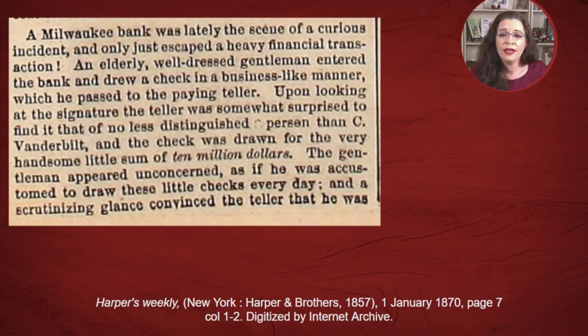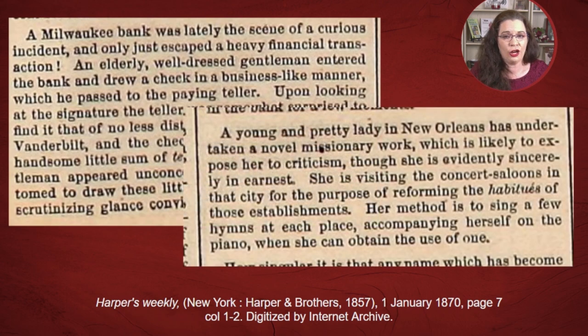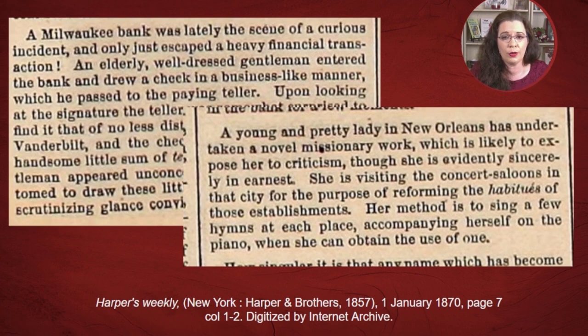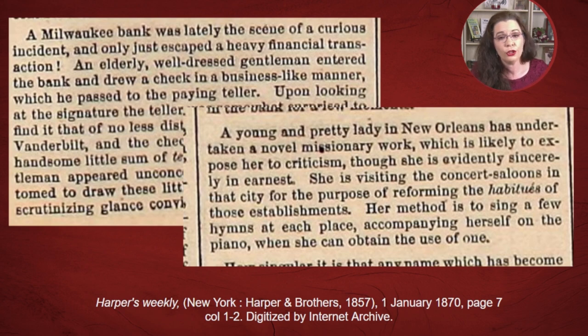Be careful, because many gossip columns do not actually identify someone by name. This second article is about a young and pretty lady in New Orleans doing missionary work. The article talks about how she proceeded to do this work. Again, we don't know her name, but if your ancestor happened to be a missionary from New Orleans, this might be her. Or your relatives might have known her. If you do happen to figure out a gossip column is about your ancestor, be careful, because in gossip columns some of this stuff is not factual. Perhaps that is why they never attach an actual name to the tidbit.